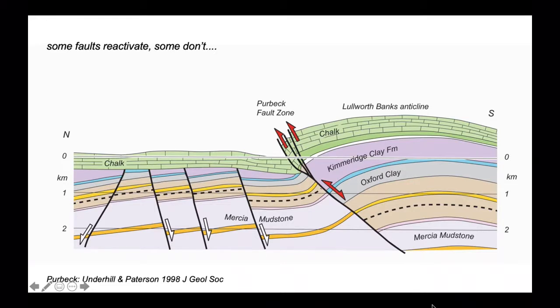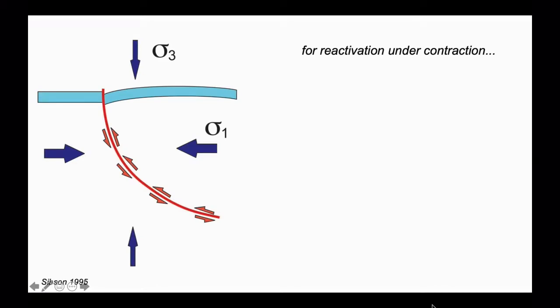This issue is explored by Rick Sibson using this setup. Let's imagine a normal fault or a set of normal faults with different dips, and here these different dips are all pulled together onto a single fault surface. In order to reactivate this structure under contraction, the maximum compressive stress will be horizontal. The minimum compressive stress will be vertical. We can consider the angle of incidence between sigma1, the maximum compressive stress, and the fault surface. This angle of incidence is theta.